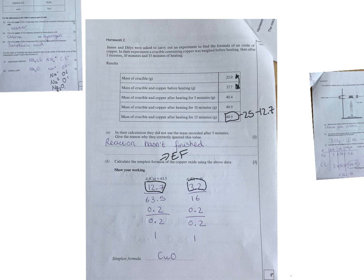I then divided them by their mass numbers, and then I divided by the smallest number. And you ended up with CuO. Nice easy one.